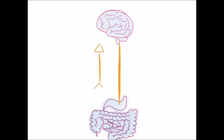The vagus nerve is bidirectional, meaning that the gut can send signals to the brain, and vice versa. The immune system is heavily involved as well.